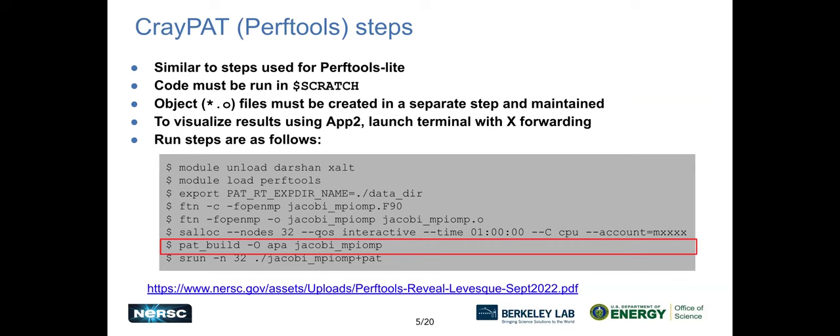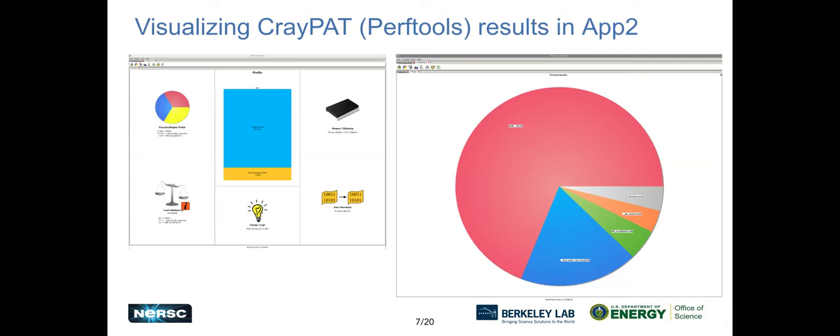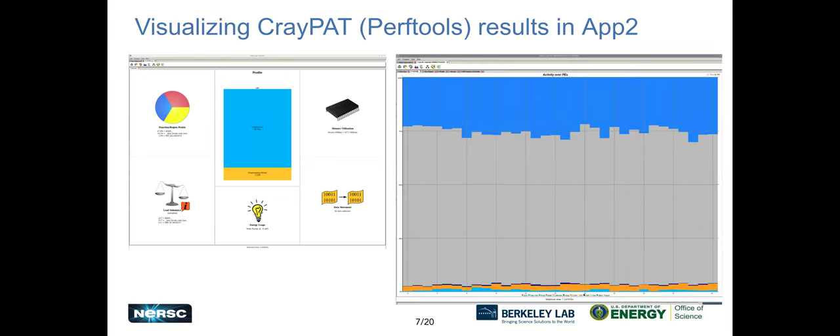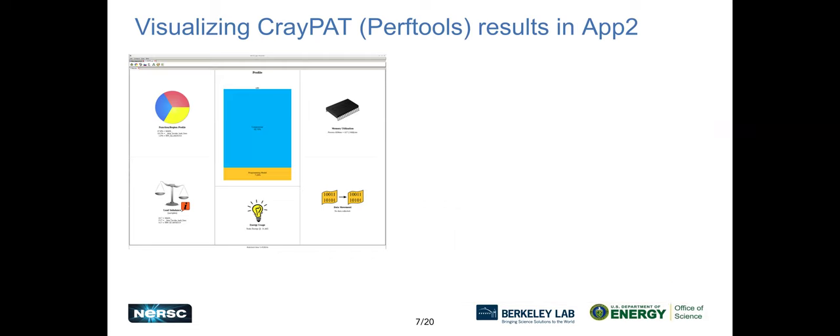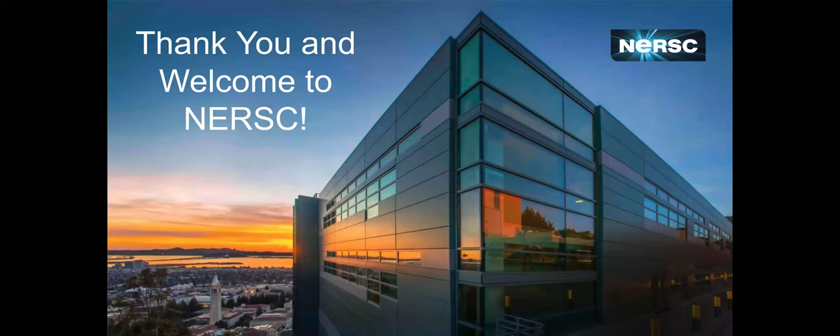Pat report, again, like I said, you can use it for a full collection of things. And then you can view the data in apprentice two by creating your data directory and running pat report on it. And apprentice two has just a bunch of different things that you can view. The generalized setting, the profile. You have a call tree. You have your samples and where they took place. You have a PE activity tree. So you can see where activity is happening over time. And you have a communication matrix. All right. And that's it. Thank you.